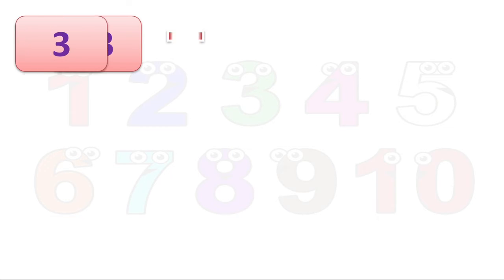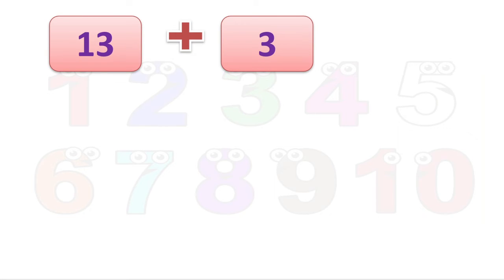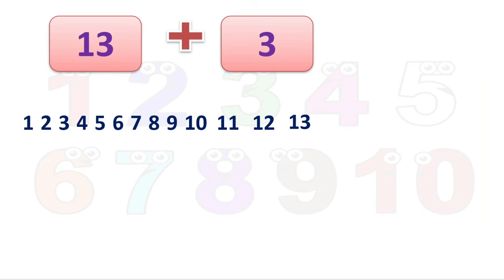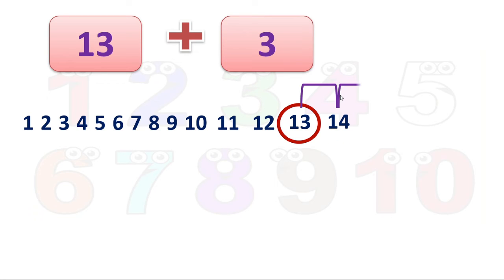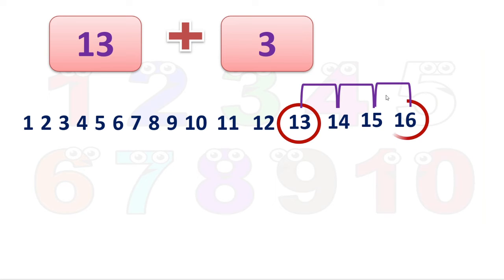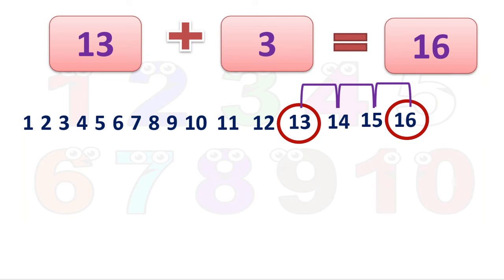Here: 13 plus 3 is equal to how much? We already have 13. Then how many steps do we count in the forward direction? 3 numbers. After 13 comes 14 — first number, then the second number, then the third number. We got 16. So 16 is our answer.